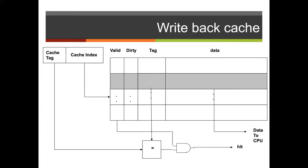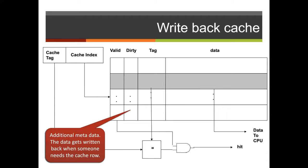With a write-back cache, we need additional information included for data housed in our cache entry. Specifically, the metadata in each cache entry uses a valid bit and a tag field. However, this doesn't provide all the required information for cache decisions, so we add additional metadata for each cache entry called a dirty bit. With this, data gets written back when someone needs the cache row.